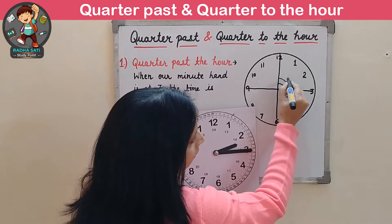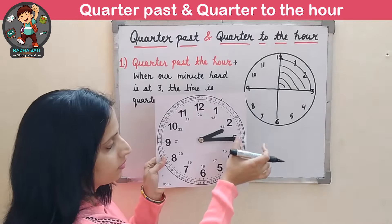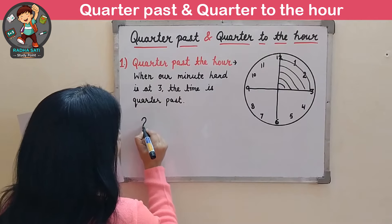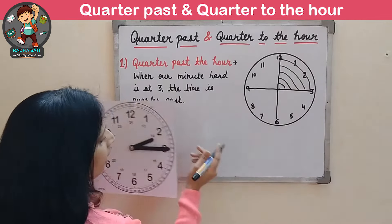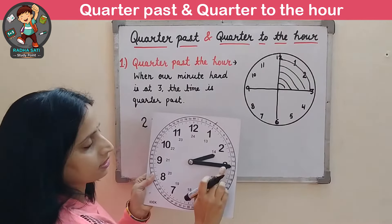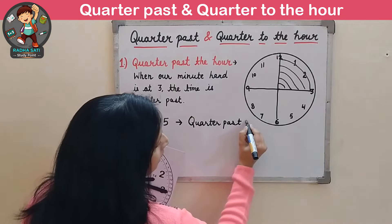Look at this clock. The minute hand is at 3, which means 15 minutes. Now look at the hour hand — it is between 2 and 3, but it is closer to 2. That's why we take 2 hours, 15 minutes. We write it in digital form as 2:15. And in words, we write quarter past 2.